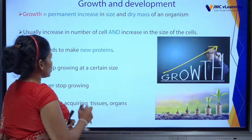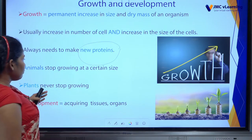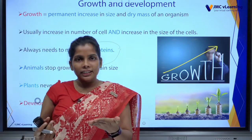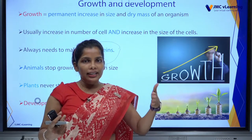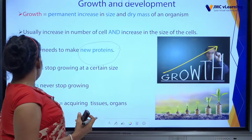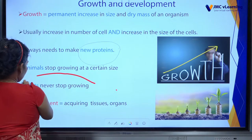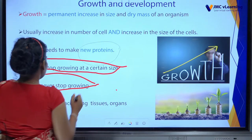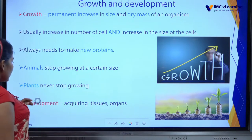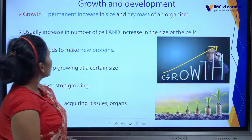Growth means an increase in the number of cells and the size of cells. Growth always needs new proteins. Animals stop growing at a certain size — just like us, we grow to a certain height. But plants never stop growing. This is the difference between animals and plants.